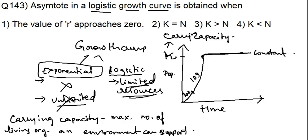Now you have to find out where the asymptote is obtained. The asymptote is where the number of living organisms is equal to K. See, asymptote is at this point where the curve becomes constant. That point will be known as asymptote.